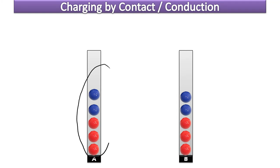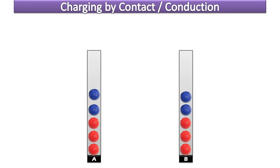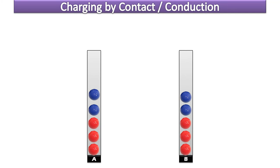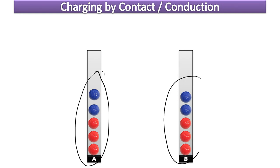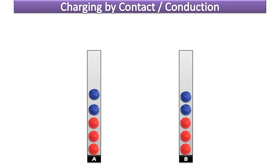Atom A is still positively charged, but now it only has a charge of positive 1. It's not as positive as it was before, but it's still positive. And this neutral object became charged by contact — it is now positive. It was neutral; now it's positive. It was charged by contact.